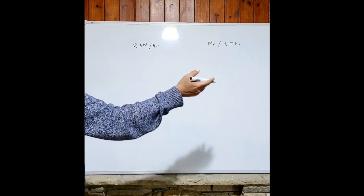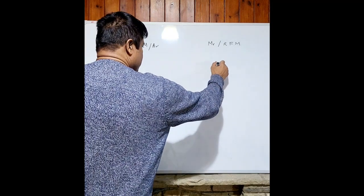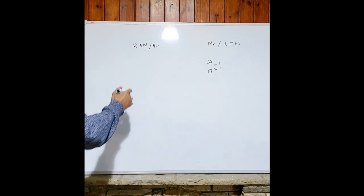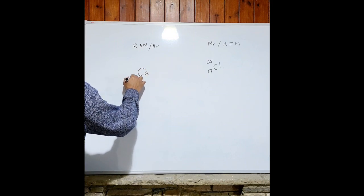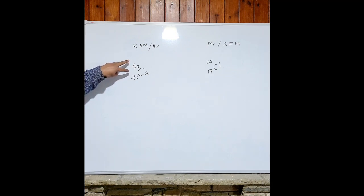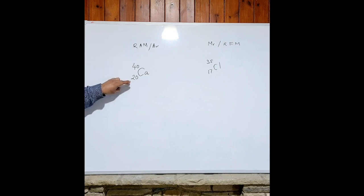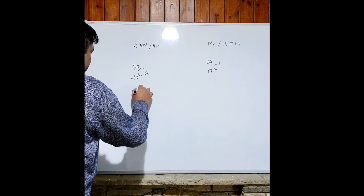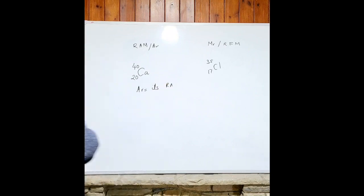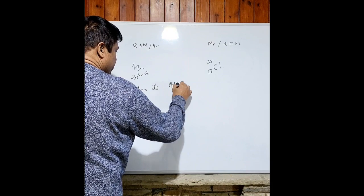You can pick any element from the periodic table. Let's take chlorine — atomic number 17, mass 35 — or calcium, 20 and 40. When you look at any element in the periodic table, there are two numbers: a bigger number and a smaller number. The bigger number is the AR — relative atomic mass.